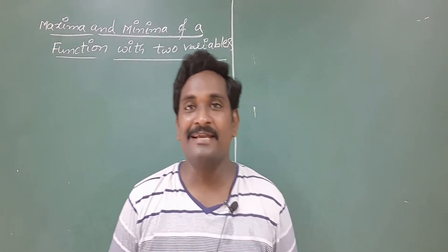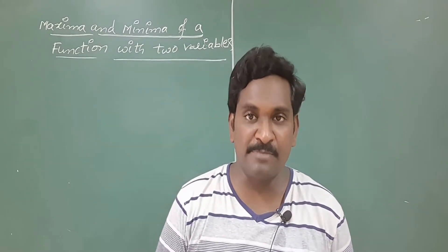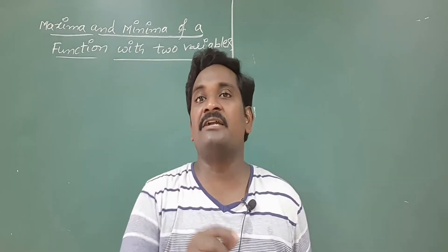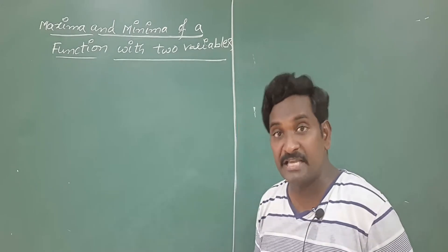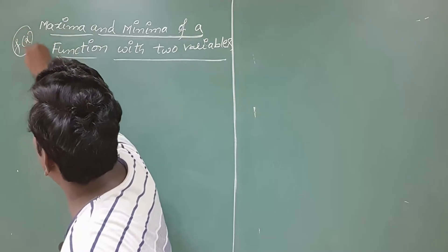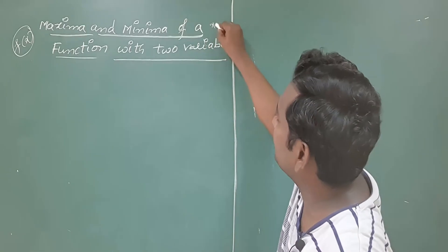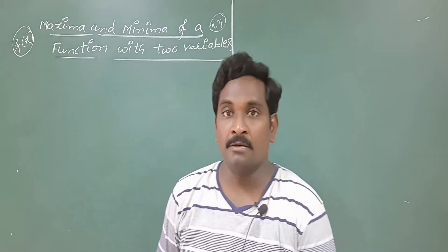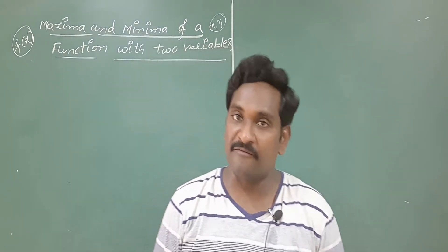Hi friends, welcome back to our channel. In this video I would like to explain the concept of maxima and minima of a function with two variables. Already in your 11th and 12th grade you saw how to find the maxima and minima of a function with a single variable, represented with f of x only. But here I am taking a function with two variables x and y, and I will explain the procedure of how to find the maximum and minimum of a function f of x comma y.